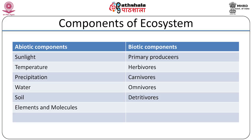Among the abiotic components are sunlight, temperature, precipitation, water, soil (that is the edaphic factor), and elements and molecules. Whereas in the biotic components, we will study about the primary producers, herbivores, carnivores, omnivores, and detritivores.